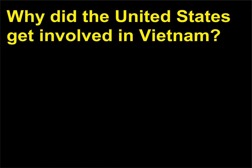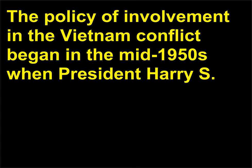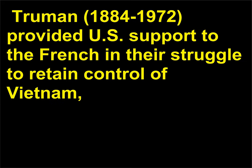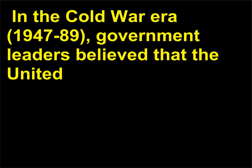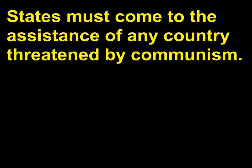Why did the United States get involved in Vietnam? The policy of involvement in the Vietnam conflict began in the mid-1950s when President Harry S. Truman, 1884–1972, provided U.S. support to the French in their struggle to retain control of Vietnam, which was then part of French Indochina. In the Cold War era, 1947–89, government leaders believed that the United States must come to the assistance of any country threatened by communism.